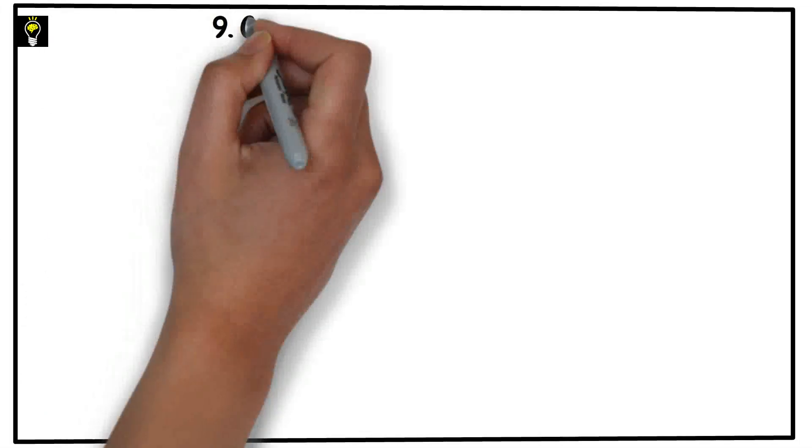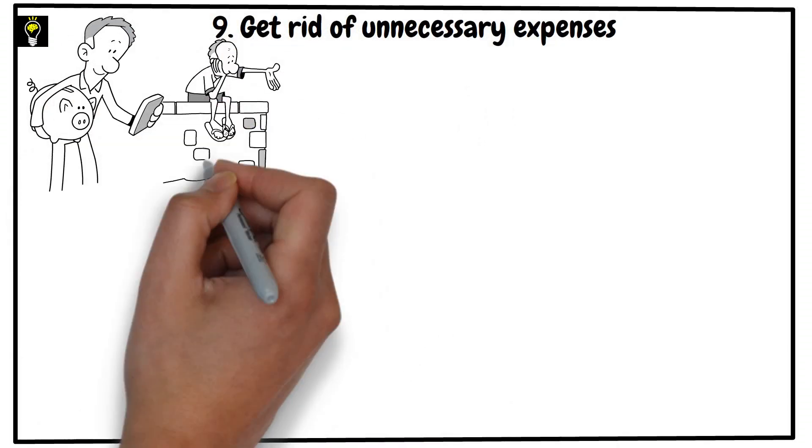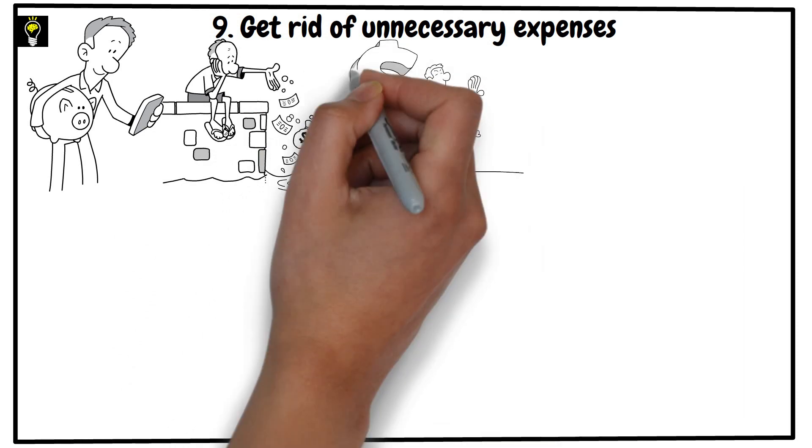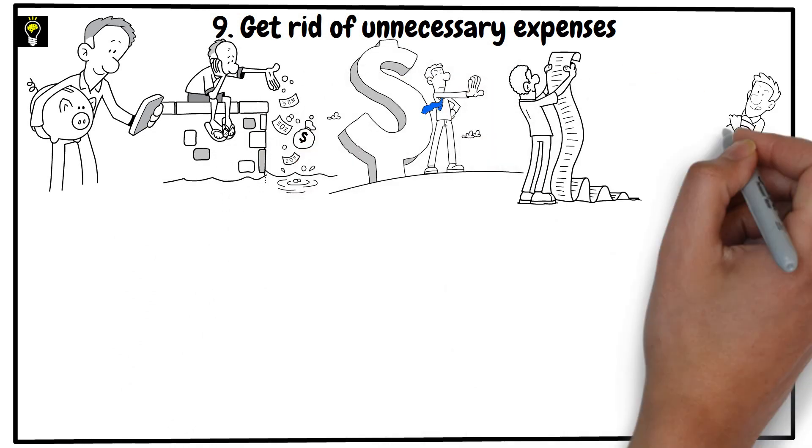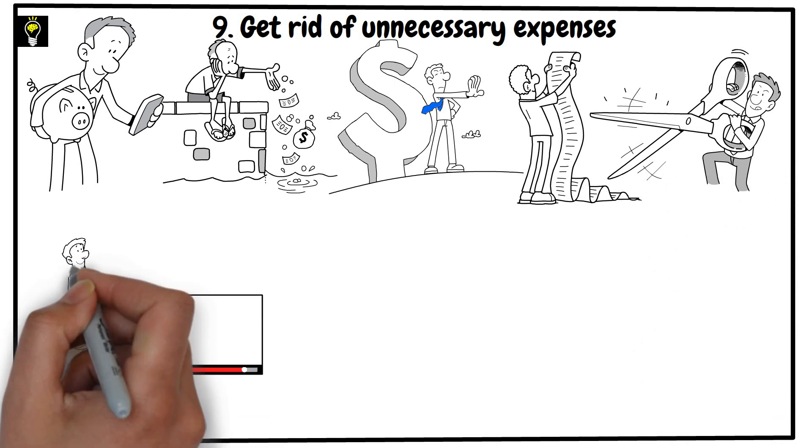Get rid of unnecessary expenses. If you want to save money, you need to get rid of unnecessary expenses. You don't need to spend money on things that you don't need. You can save money by getting rid of your cable TV subscription,